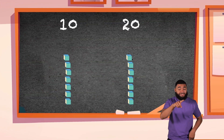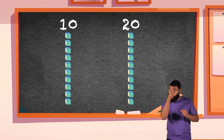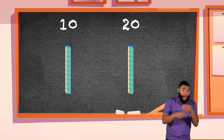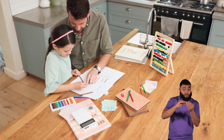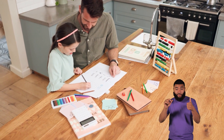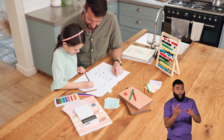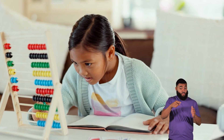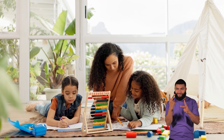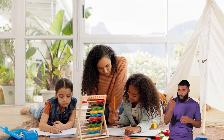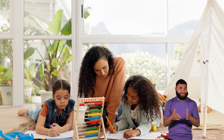Great work, number crunchers! Make sure you remember that when you are counting or adding, the numbers 10 to 20 all have one group of 10. Once you have that fact memorized, you will be able to figure out how many ones are left over. Easy peasy!